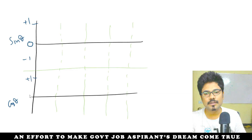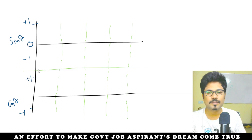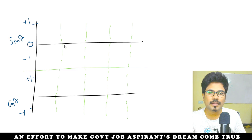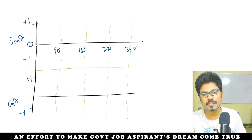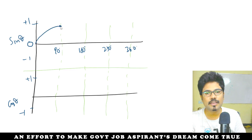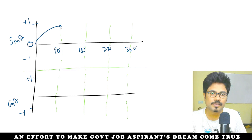This is plus one, this is minus one. For sin: sin 0 is 0. This is 90 degrees, 180 degrees, 270 degrees, 360 degrees. Sin zero is zero, then it rises to 1 at 90 degrees.